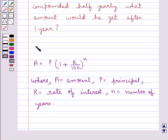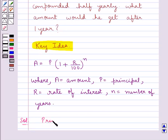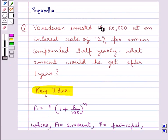This is the key idea that we use for this question. Now, let's move on to the solution. The principal P for this question is Rs. 60,000, that is the money which Vasudevan invested.